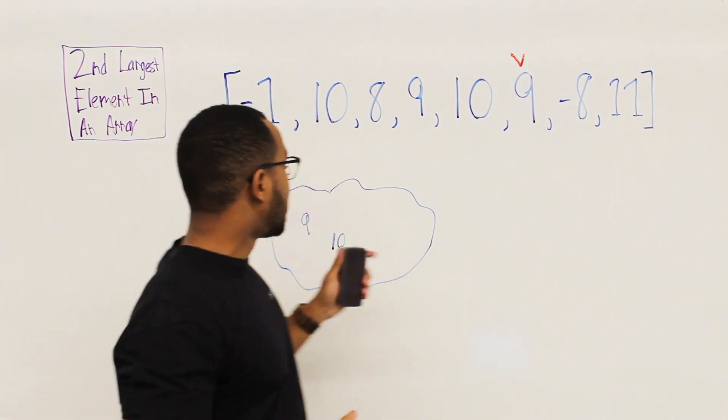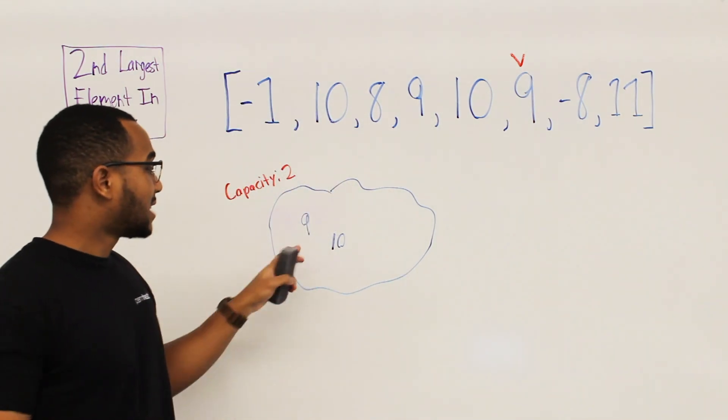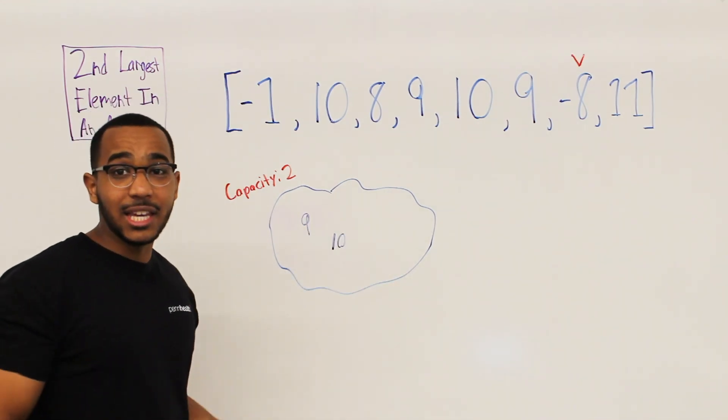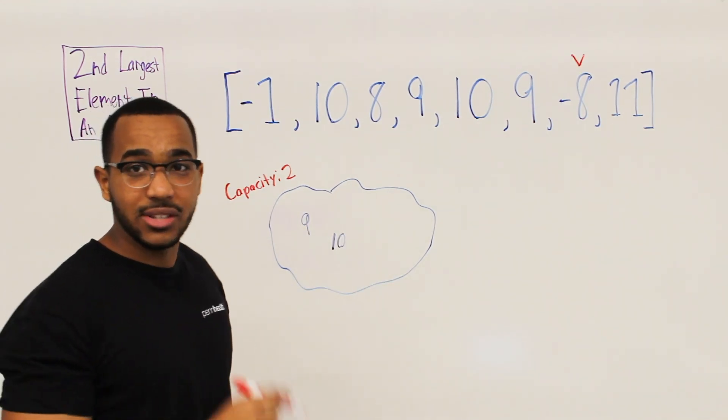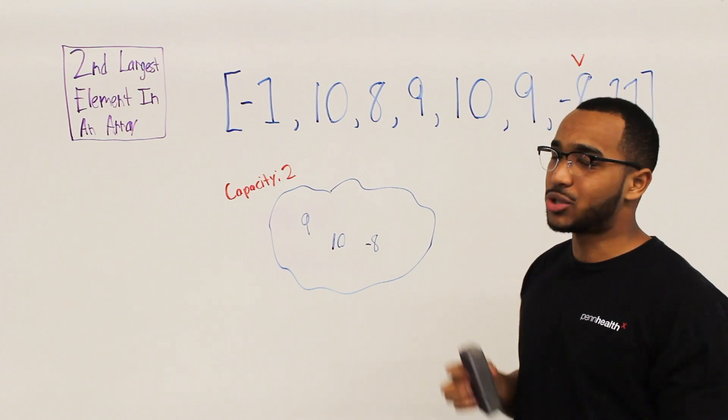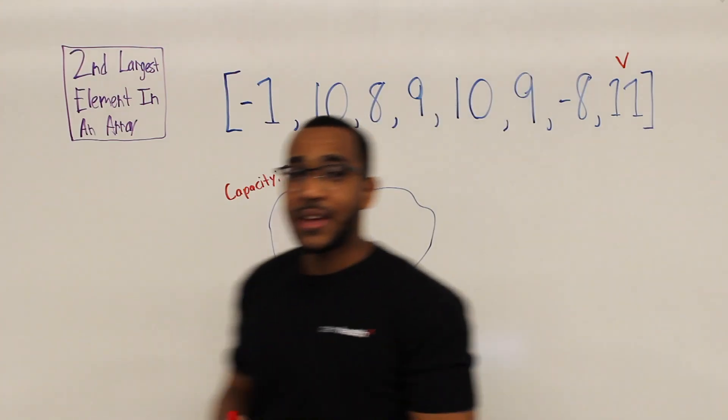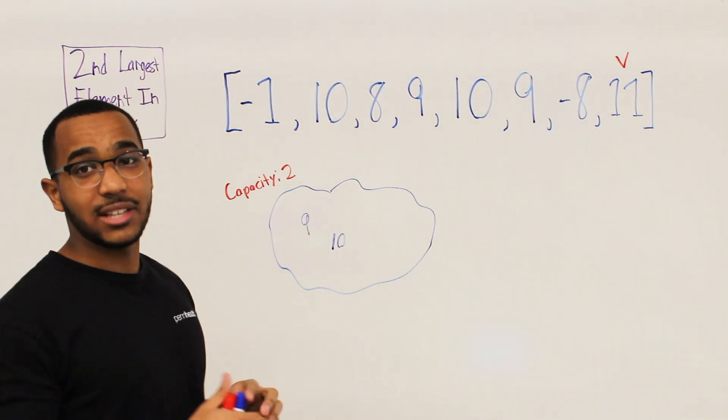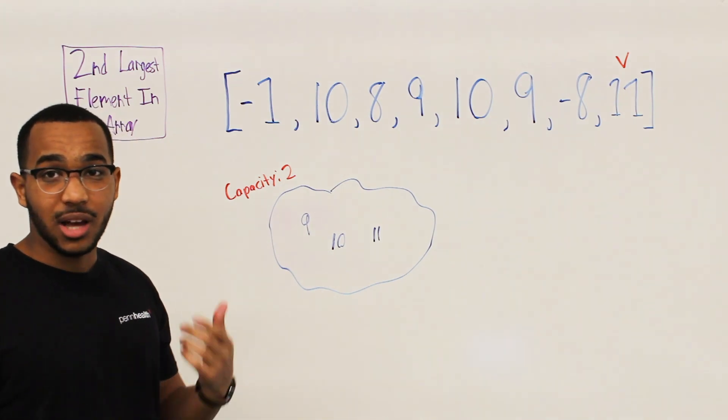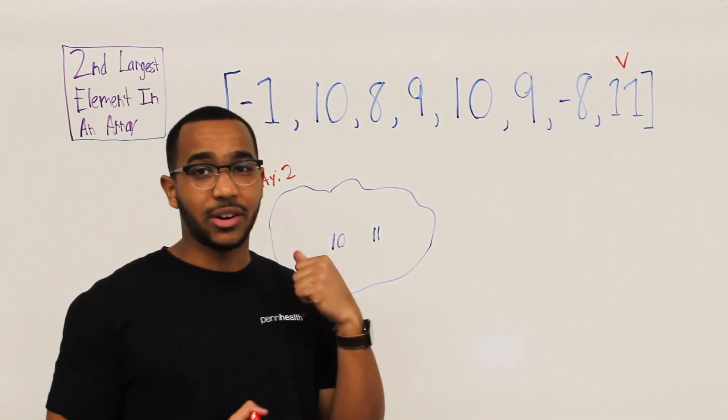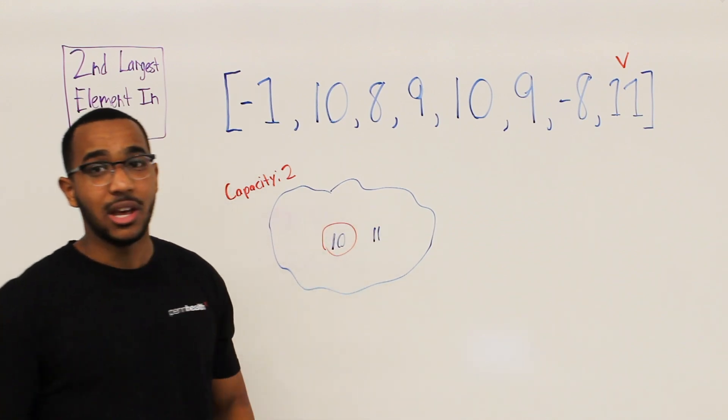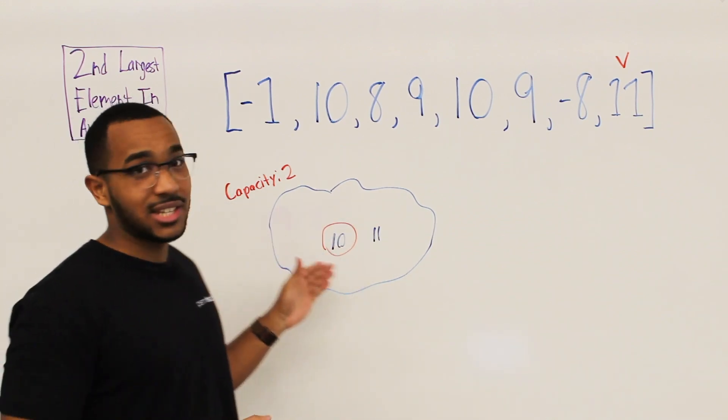Then we go to the nine. So does nine already exist in the heap? Yes, it does. So we don't even need to add it because we already have track of it. Does negative eight exist in the heap? No, it does not. Add negative eight to the heap. So now our heap is over capacity. Remove the smallest item. It's going to be the item we just added. And then we move on to 11. So 11 does not exist in the heap. Add 11 to the heap. Now we remove the smallest item. Now all we do is we do either a peak or a remove operation on the min heap. And that is going to yield us the second largest item, which is 10.